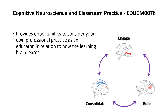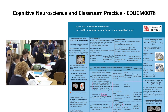It is the unit cognitive neuroscience and classroom practice where you will really begin to apply what you know about neuroscience in the classroom. This is going to provide opportunities to consider your own professional practice as an educator in relation to how the brain learns. We talk about that in terms of processes involved with engagement, with building of knowledge, and with the consolidation of knowledge. During this unit, you will be generating a lesson plan and being able to reflect on that lesson plan in terms of what we know about the brain and research that gives insight into that learning process.